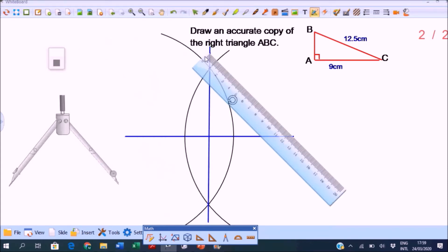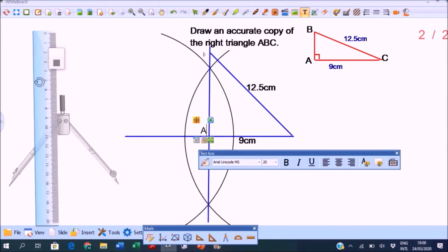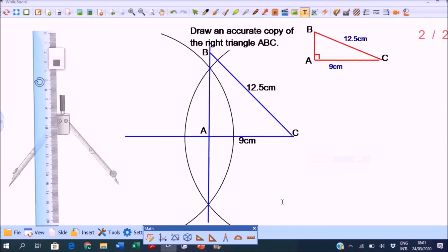Now use the ruler to draw the perpendicular bisector, and then use the ruler to measure 12.5 centimeters from our endpoint to the perpendicular bisector. So this is now an accurate copy of the right triangle ABC.